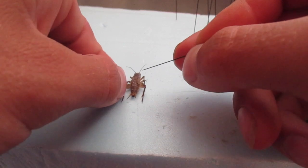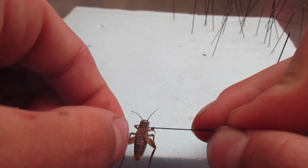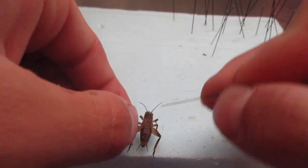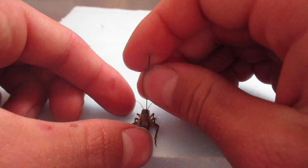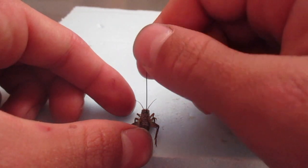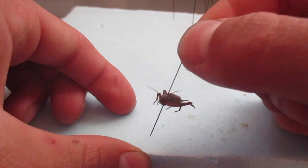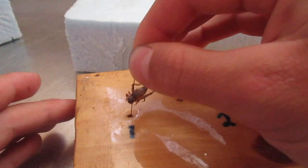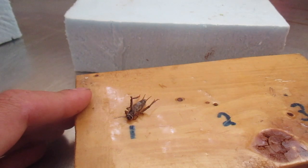And where you want to pin it is the right side of the thorax here. Straight down, making sure you go straight down and the insect is level. And then once you've got in just a little bit, you take your pinning block and you go to level one. You push the pin all the way down until the insect is flat on there.